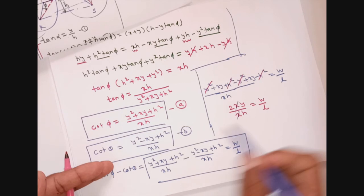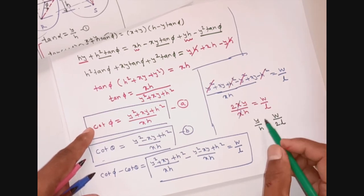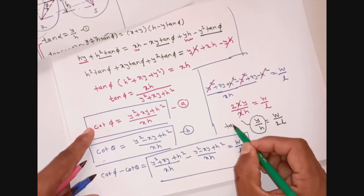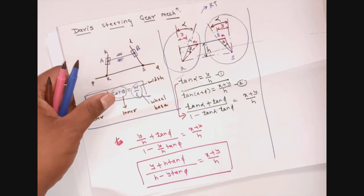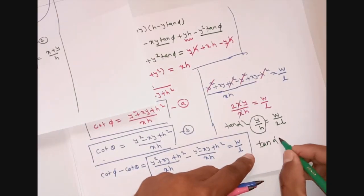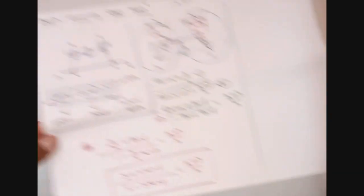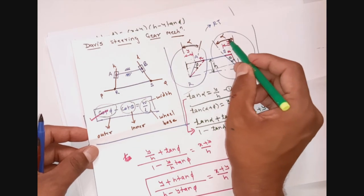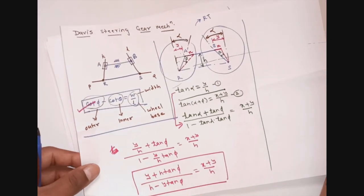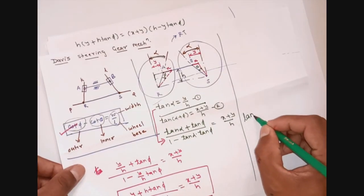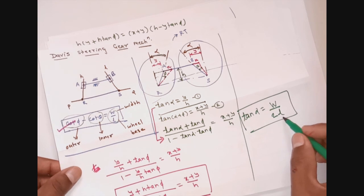Since x cancels with x, we get the final equation: y/H = W / (2L). And since y/H equals tan α from equation (1), we obtain: tan α = W / (2L). This is the equation used to determine the initial inclination α of the bell crank lever with the front axle when designing the Davis steering gear mechanism, in order to satisfy the fundamental equation of correct steering, where W is the width of the vehicle frame and L is the wheel base.